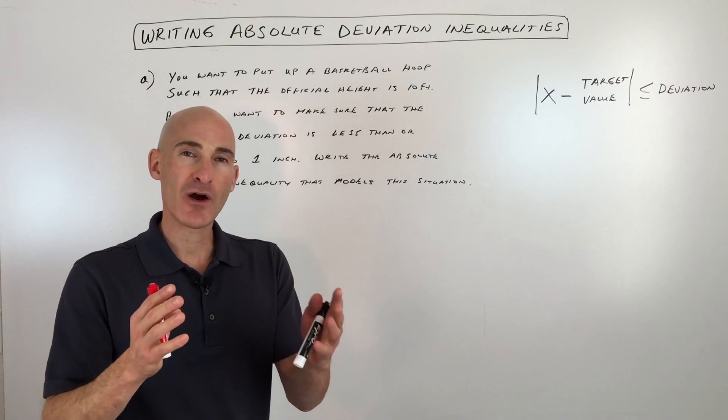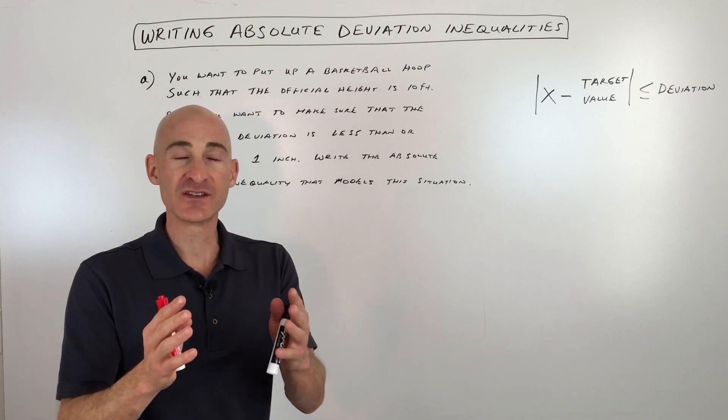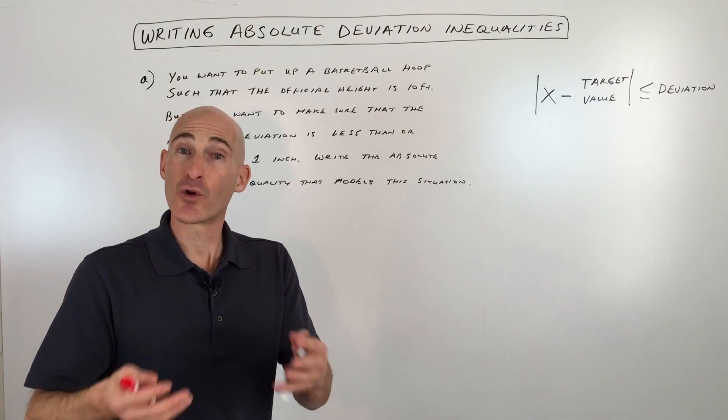When you talk about deviation, you're talking about how far off something is from a target value or an ideal value.